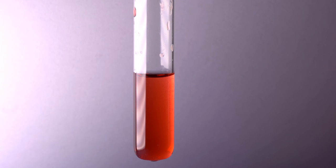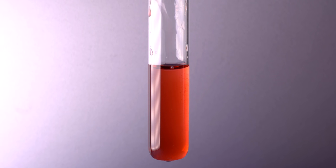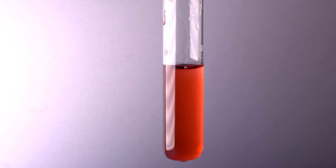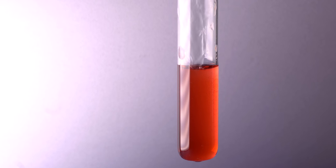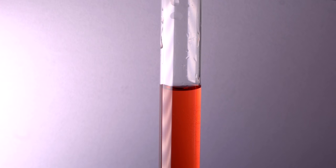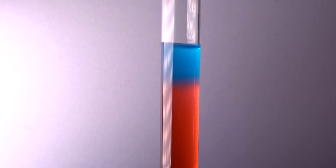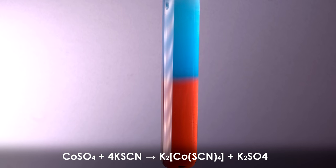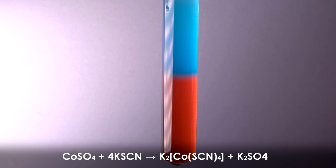For instance, if potassium thiocyanate is added to cobalt sulfate, there will be no reaction in water. But if acetone is added to the test tube, the top layer of the solution will turn blue.